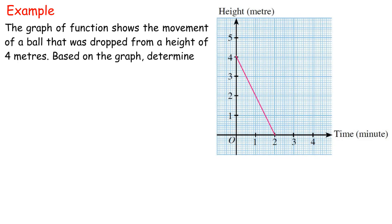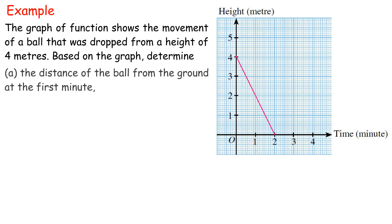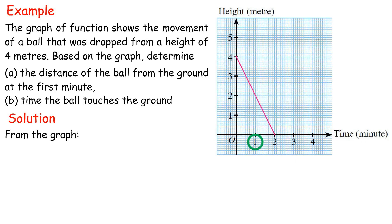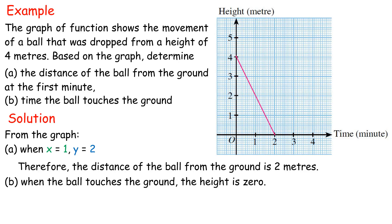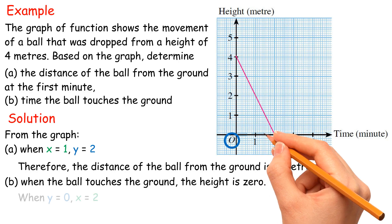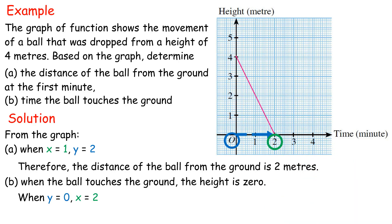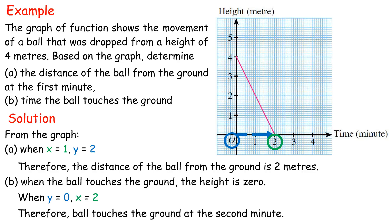Example: The graph of the function shows the movement of a ball that was dropped from a height of 4 meters. Based on the graph, determine: A) the distance of the ball from the ground at the first minute, and B) the time the ball touches the ground. Solution: A) when x equals 1, y equals 2. Therefore the distance of the ball from the ground is 2 meters. B) when the ball touches the ground, the height is 0. When y equals 0, x equals 2. Therefore the ball touches the ground at the second minute.